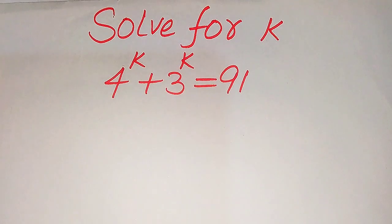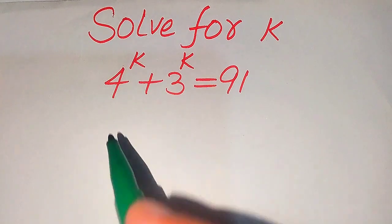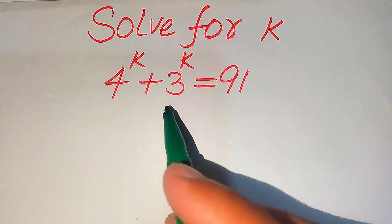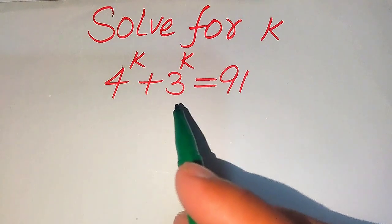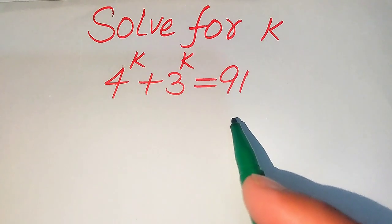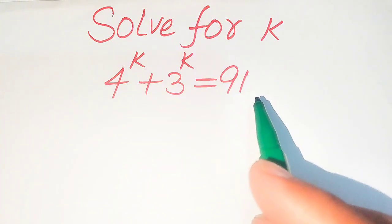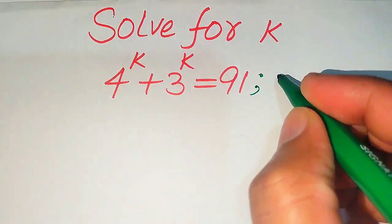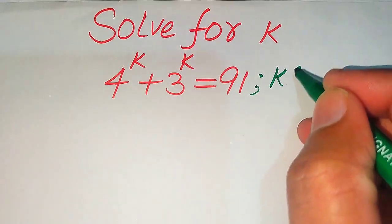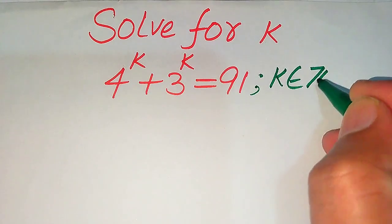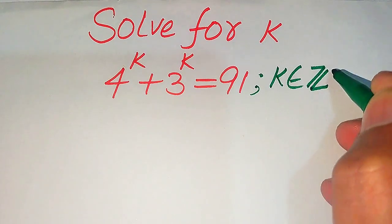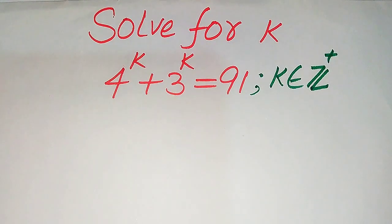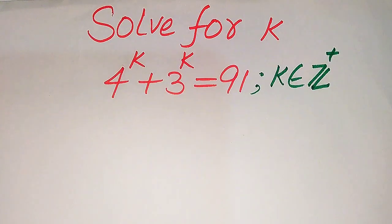Hello everyone. How to solve this problem for the values of k, if we have 4 to the power of k plus 3 to the power of k equals 91. We solve this problem for all the values of k, but remember that k must belong to the positive integers — meaning we solve this problem for positive integral values of k only.